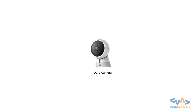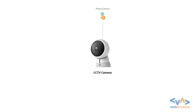Let me show you a quick presentation to represent how IoT devices work. Here we have a CCTV camera which has 5 common properties of IoT-based devices. The first one is it's a physical device — you can see it, you can install it in your home. Second, it's an electric or electronic device. Third, it has sensors which you can see, like motion detection, heat detection, etc.